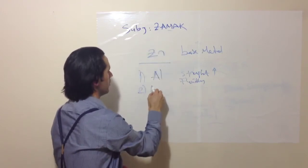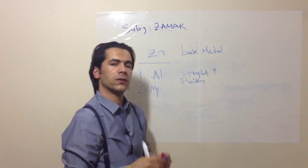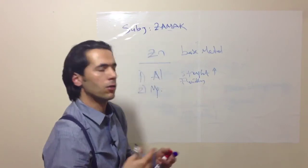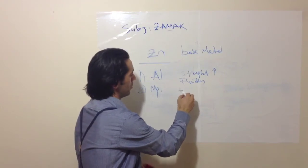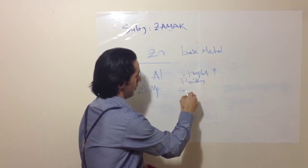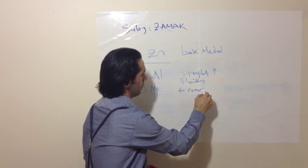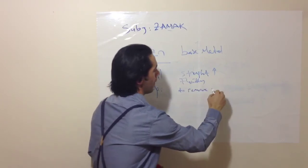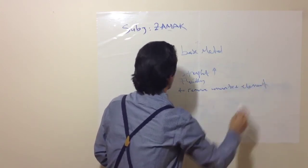Secondly, Magnesium. Magnesium is used to remove unwanted elements such as tin - to remove impurities or to remove unwanted elements.